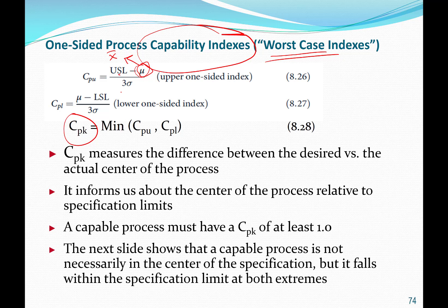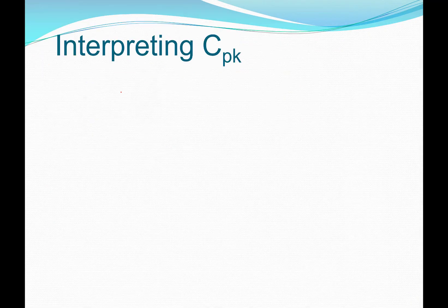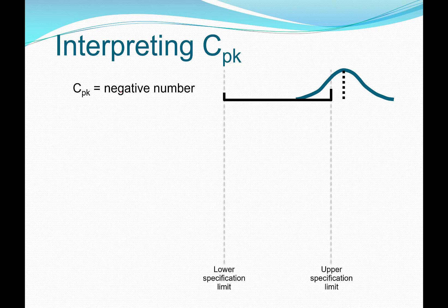C sub p k informs us about the center of the process relative to specification limits. A capable process must have a C sub p k of at least one. A capable process is not necessarily centered within the spec limits, but it falls within the spec limits at both extremes. A C sub p k that is negative in value means the center of the process output falls outside of the spec limit — in this case, outside the upper spec limit.